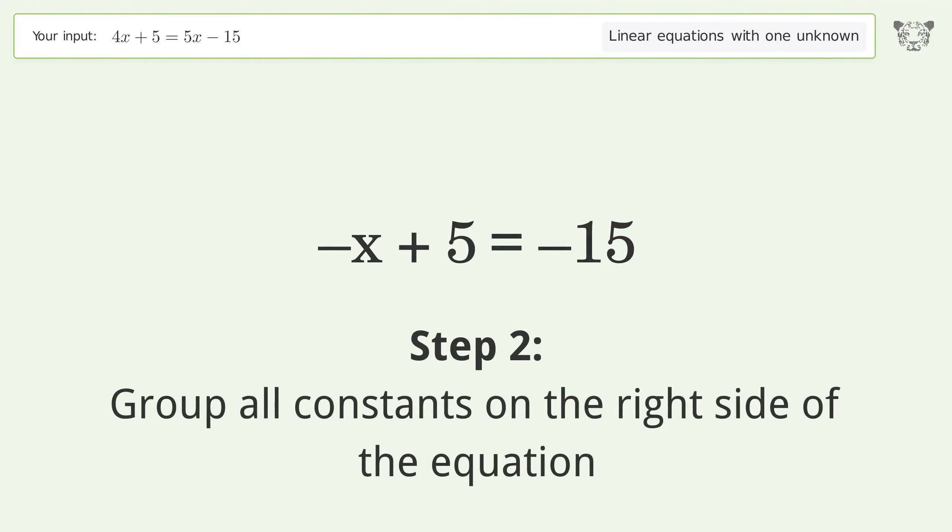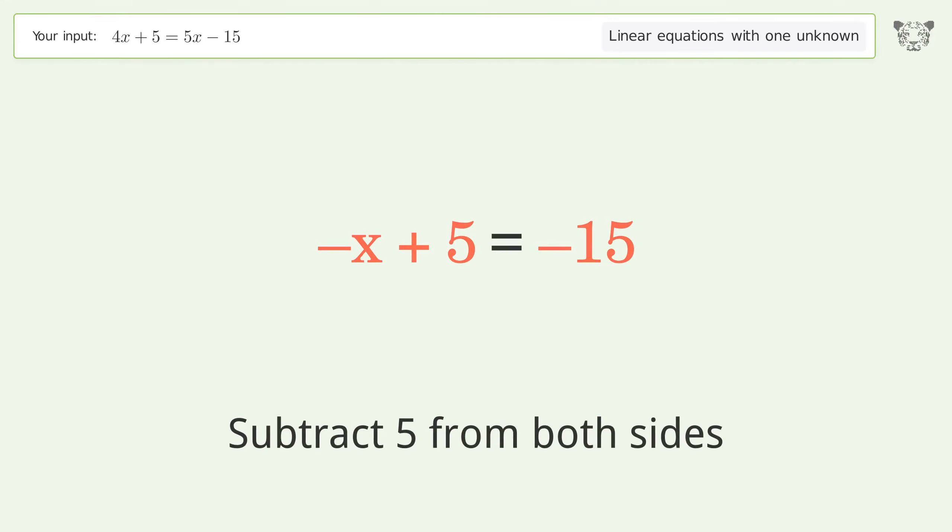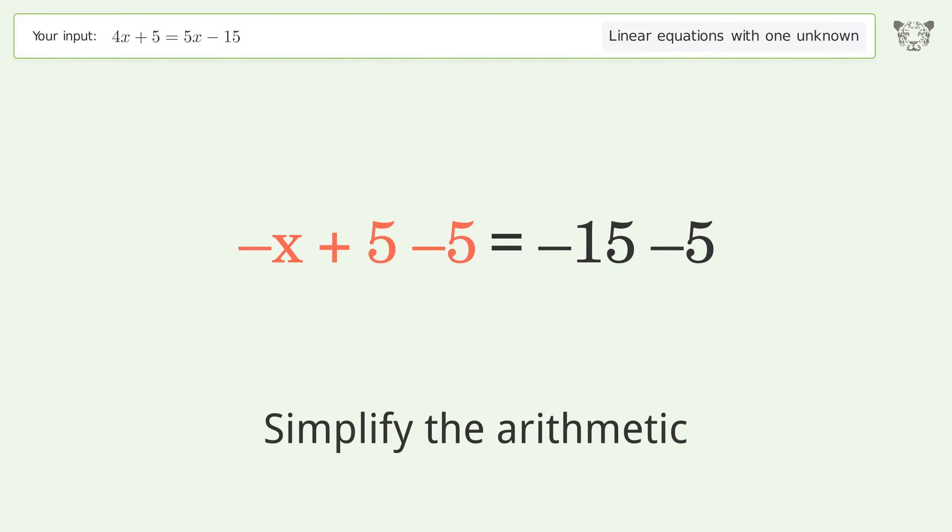Group all constants on the right side of the equation. Subtract 5 from both sides. Simplify the arithmetic.